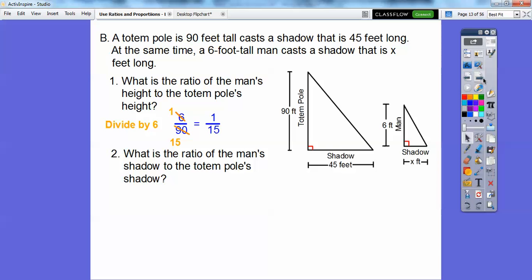So this reduces to 1/15th. I'd rather deal with that ratio. All right, now what's the ratio of the man's shadow to the totem pole's shadow? Okay, so the man's shadow is x. The totem pole's shadow is 45, so x over 45. Okay, so now we're going to write a proportion. Now we've got to be consistent, you guys. We have to be, if we have the man in the numerator here, then we're going to have to have the man in the numerator here. So we've got the man's height over the pole's height. So over here we're going to have the man's shadow over the pole's shadow.